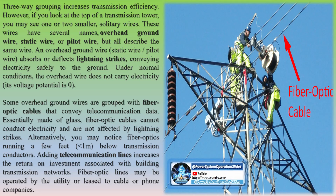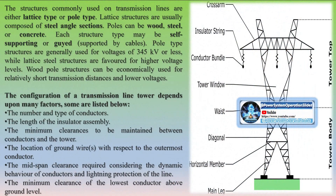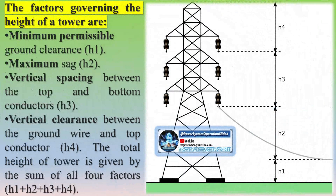Short transmission line: A short transmission line is classified as a transmission line with a length less than 80 kilometers or 50 miles, and a voltage level less than 69 kV. The capacitance effect is negligible — only resistance and inductance are taken into calculation; capacitance is neglected.